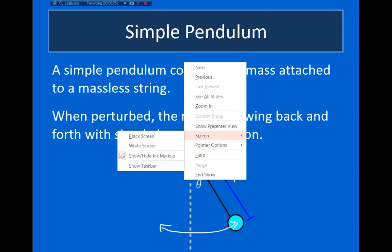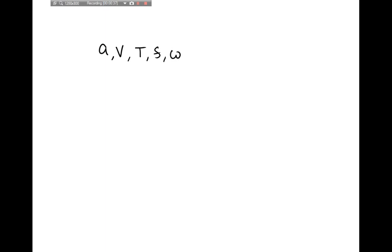Any time you have simple harmonic motion, any of the equations that relate acceleration, velocity, period, frequency, and angular frequency will always hold for any harmonic oscillator. So for example, maximum acceleration is equal to amplitude times omega squared for any harmonic oscillator.